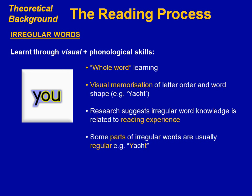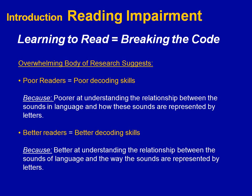Research suggests that irregular word knowledge is related to reading experience. Some parts of irregular words are usually regular — for example, in the word 'yacht', the letter Y and the letter T make the sounds that you would expect. An overwhelming body of research suggests that learning to read involves breaking this written code for the sound structure in the language. Research suggests that poor readers have poorer decoding skills — they tend to be much poorer at understanding the relationship between the letters and letter patterns in the language and the sounds that these letters and letter patterns represent.